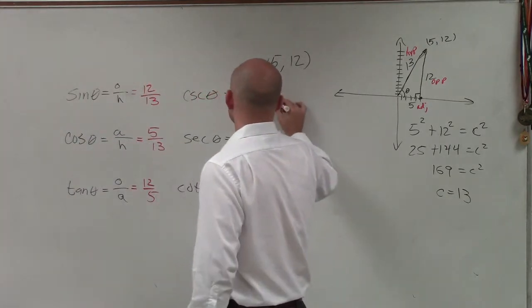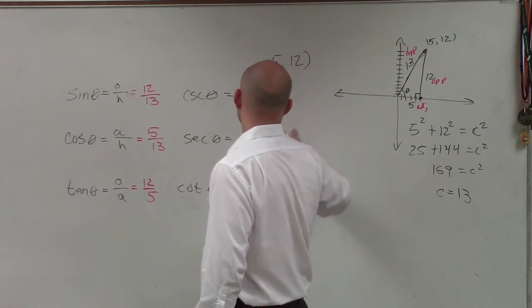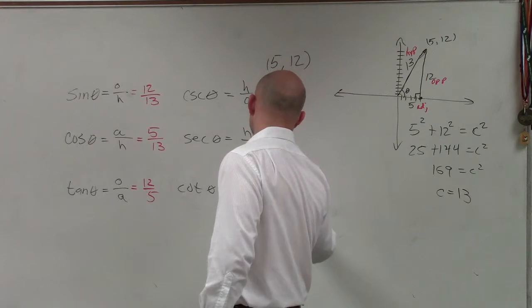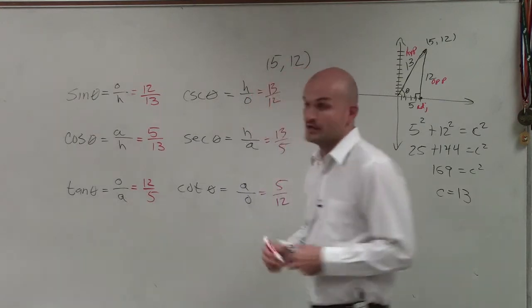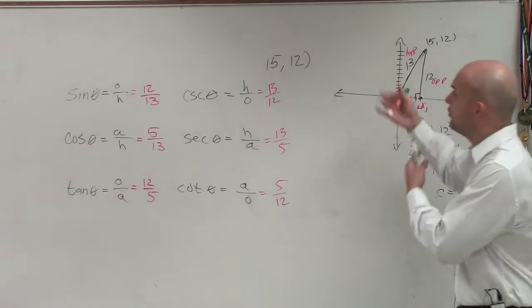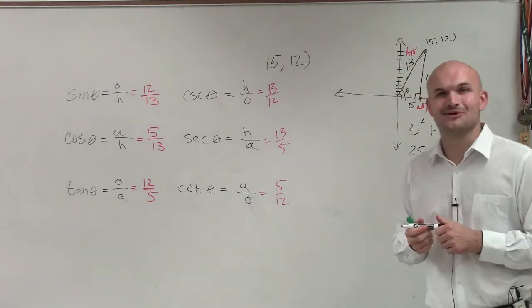So now, simply all I'm going to do is take these as the reciprocal and just rewrite them. So therefore, I have 13 over 12. Here I have 13 over 5. And over here, I have 5 over 12. So there you go, ladies and gentlemen. That is how you evaluate all six trigonometric functions when given a point that's not on the unit circle. Thanks.